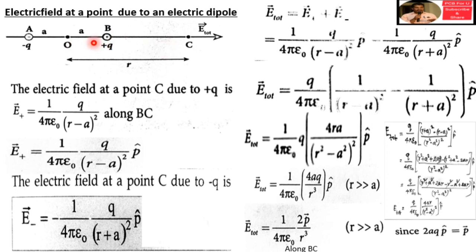The electric field at point C due to the positive charge placed at B — B is the positive charge and C is the point. The electric field is not simply 1/r² here. We use Coulomb's formula. The distance from B to C is R-C. Due to the positive charge, Q is a positive vector.